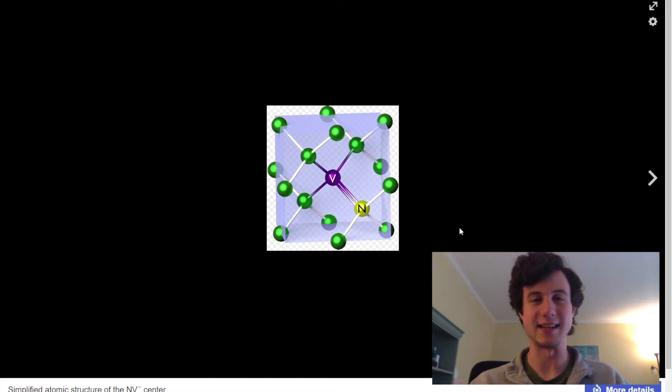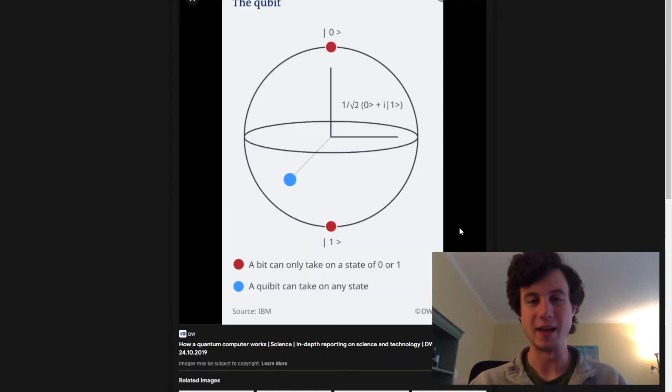But the idea is that for a quantum computer, you can't just store things as ones and zeros like you would on a hard drive or a solid state drive these days. You have to store it as something that has some sort of quantum effects involved in it to allow it to store on a qubit, which requires the superposition of the one and the zero and that sort of thing.